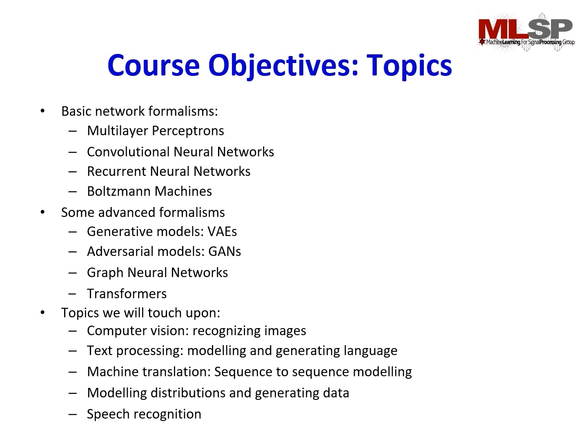The topics we'll be covering in this course are basic network formalisms such as multi-layer perceptron, convolutional neural network, recurrent neural network, and Boltzmann machines. Some advanced topics we'll cover are variational autoencoders, generative adversarial networks, graph neural networks, and transformers. These topics will touch on computer vision, text processing, motion translation, modeling distributions, generating data, and speech recognition.